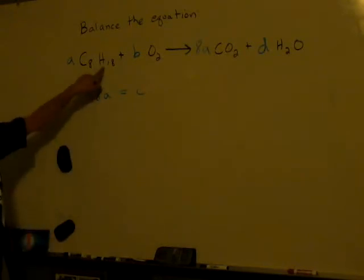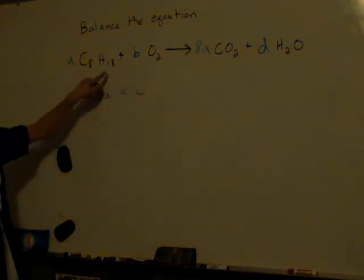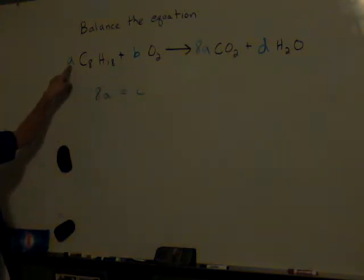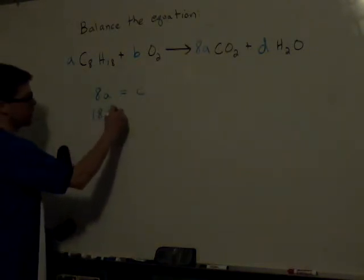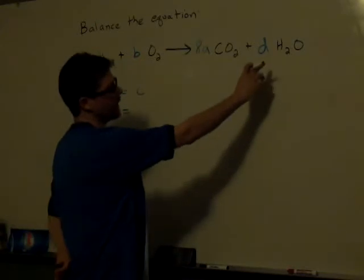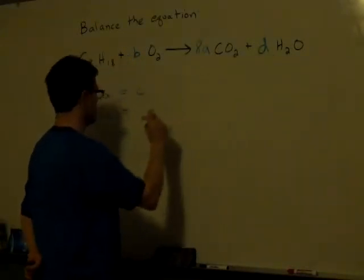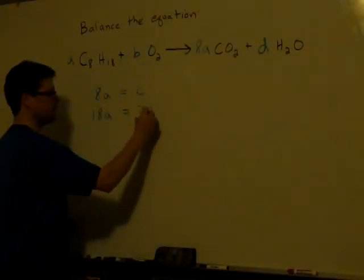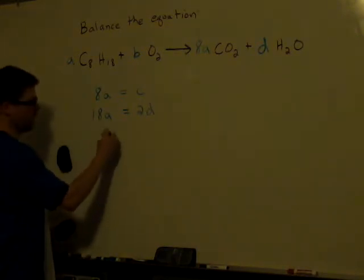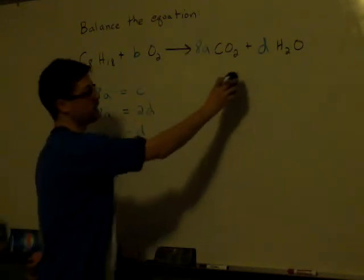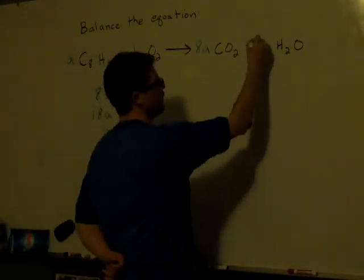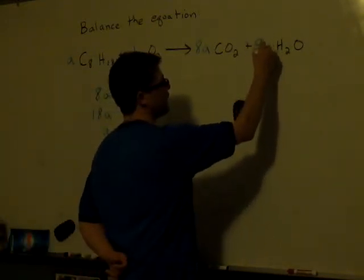Okay, next, how many hydrogens on this side? I have 18 times A of them on this side. So I have 18A hydrogens on that side, and on this side I have 2 times D. That tells me that 9A equals D. So over here, instead of a D, I will put 9A.